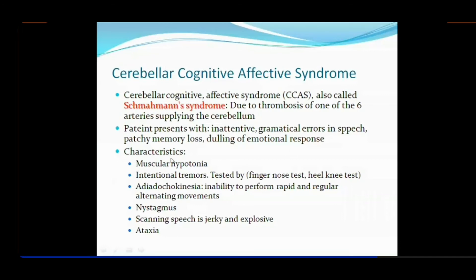In short, cognitive and affective — in these two symptom categories we see the characteristics. Additionally, there is muscular hypotonia of the skeletal system and intentional tremors. When we talk about the lateral or intermediate zone — in the intermediate zone digits are involved, and in the lateral zone all limbs are involved — there are intentional tremors.